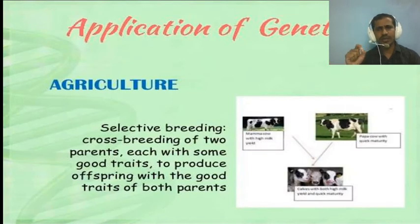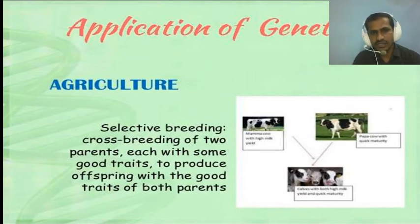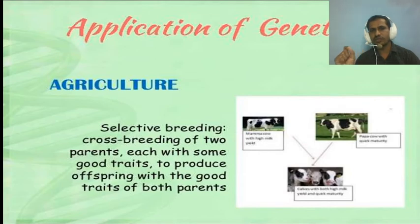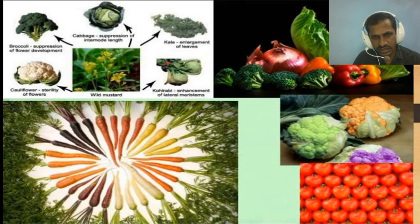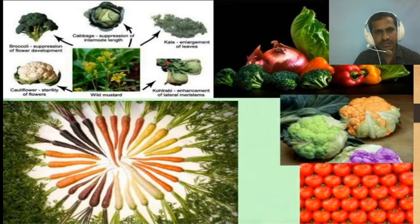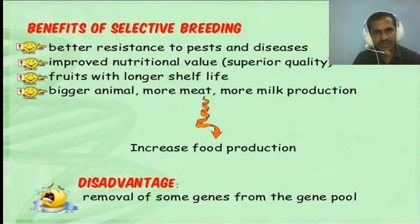Genetics is very much applicable to agriculture. Selective breeding involves cross-breeding of two parents each with good traits to produce offspring with the best traits of both parents. In agriculture, genetics is used to produce GMOs — genetically modified organisms — such as GMO tomatoes, broccoli, cabbage, onion, and carrot.